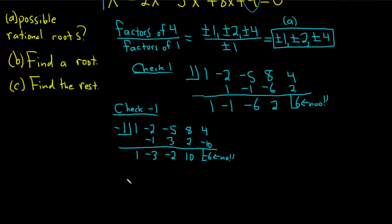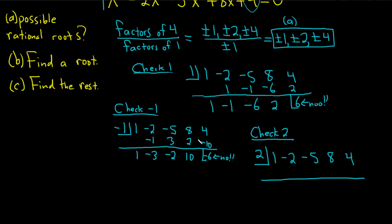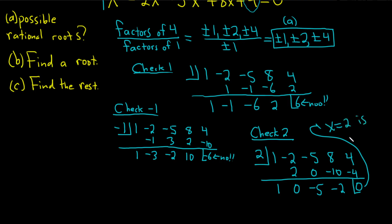Let's try 2. I start with 1 and negative 1 because they usually work, but now let's try 2. Bring down the 1. 1 times 2 is 2. Add and get 0. 0 times 2 is 0. Add and get negative 5. Negative 5 times 2 is negative 10. Add and get negative 2. Negative 2 times 2 is negative 4. Add and get 0. This means x equals 2 is a root — that's the answer to part B.